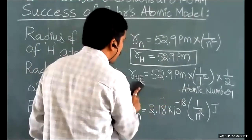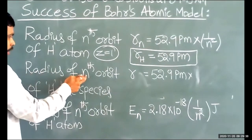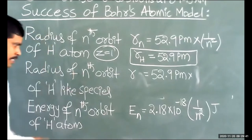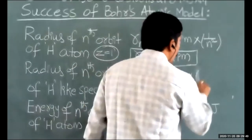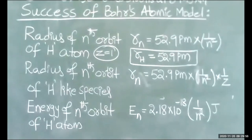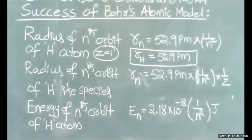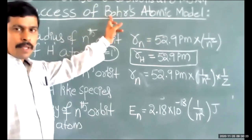Whenever there is a hydrogen-like species, to calculate the radius of its nth orbit, the formula is: rn = 52.9 picometers × (1/n²) × (1/Z). These formulas are very useful for NEET. For PU level, only these formulas will be very important. Please try to understand the concept.